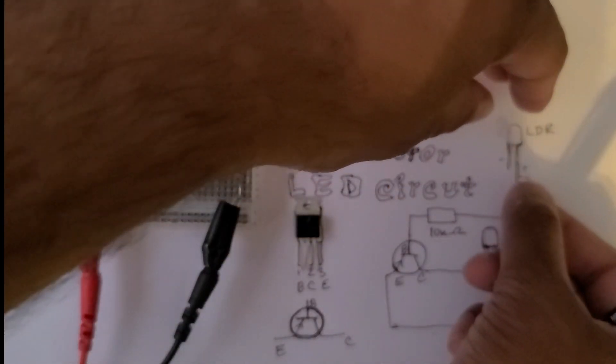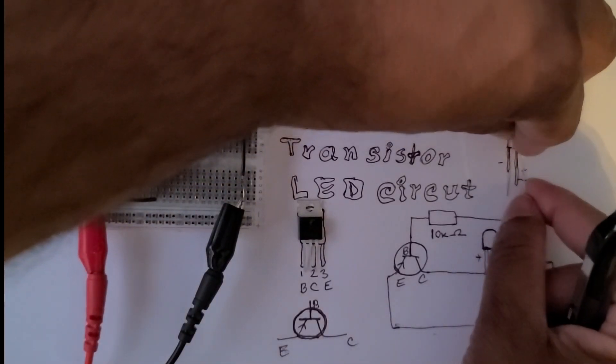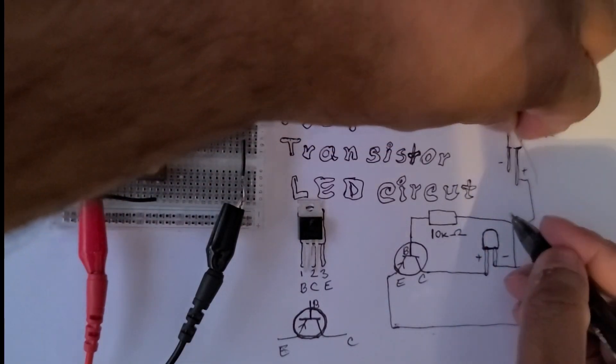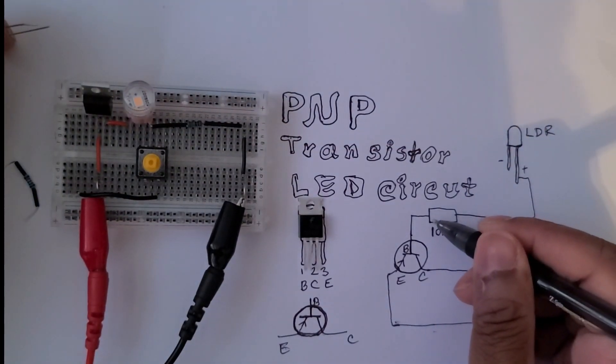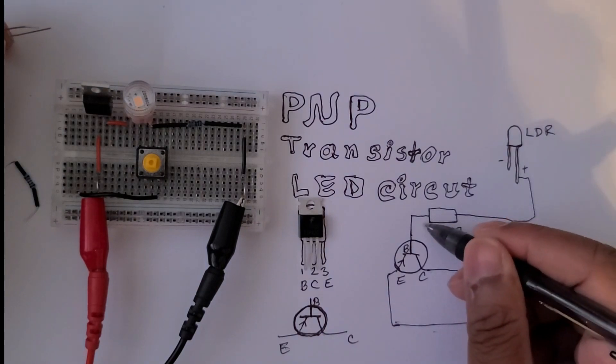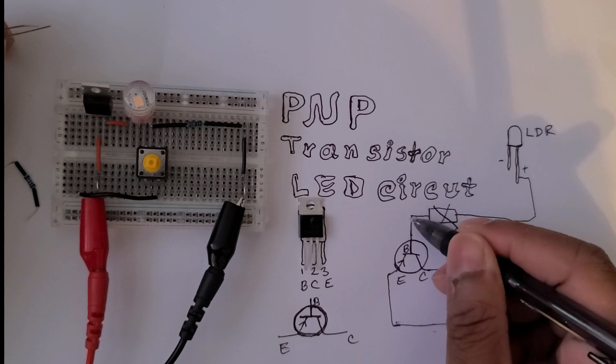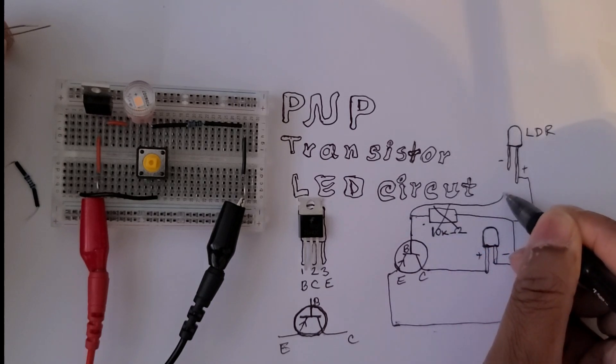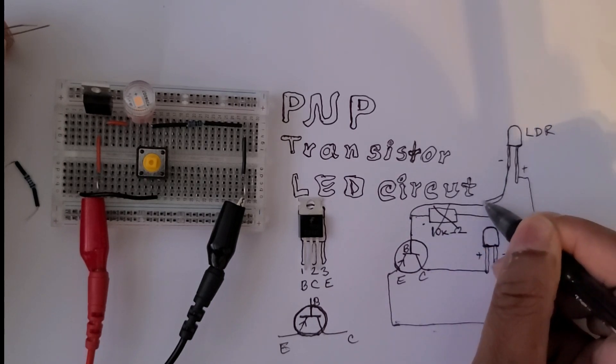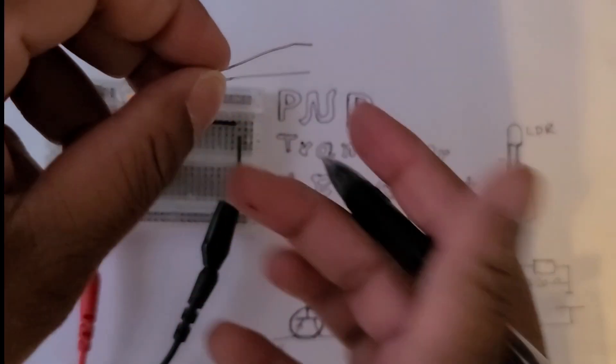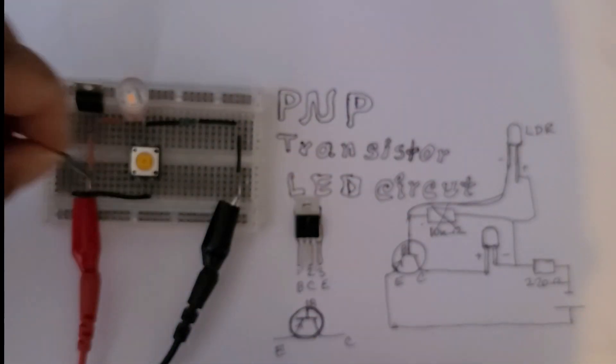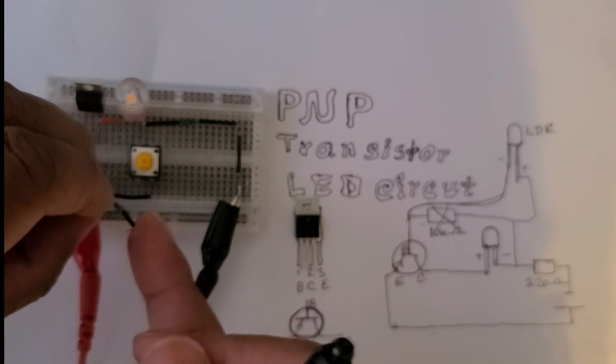This LDR has positive and negative sides. If I eliminate this 10k ohm resistor and bypass it with the LDR in this configuration, I will replace the resistor.